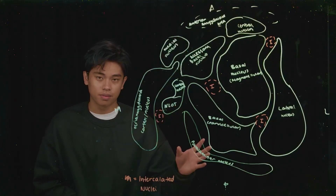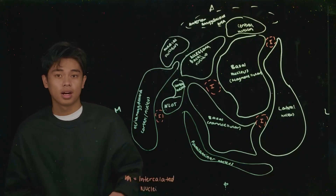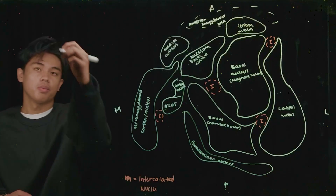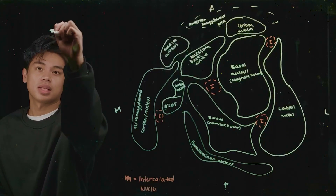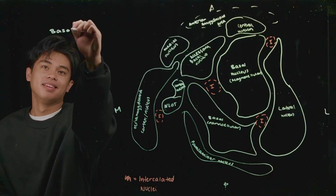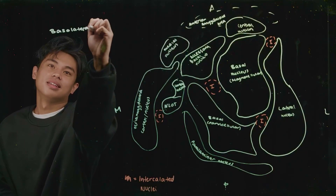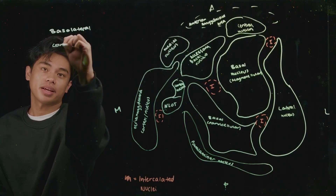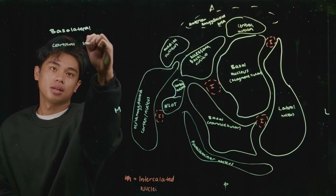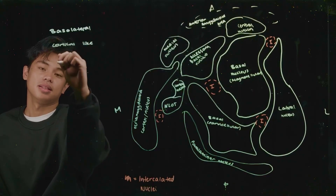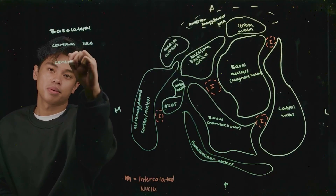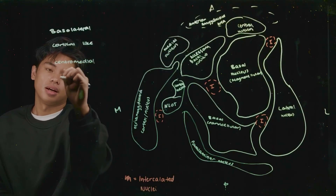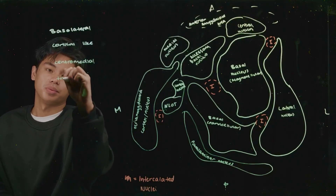Each and every one of these nuclei are split into four different groups, each with four different functions. We have the basolateral group, the cortical-like group, the centro-medial group, and the transitional group.